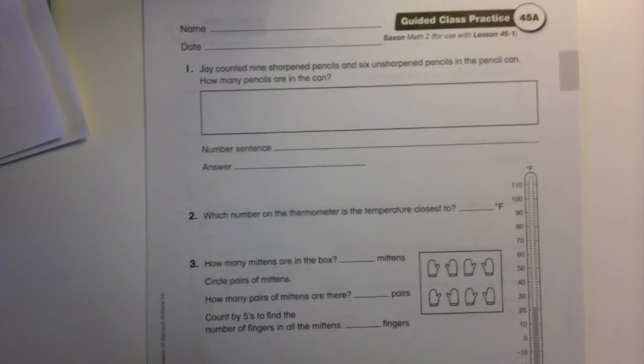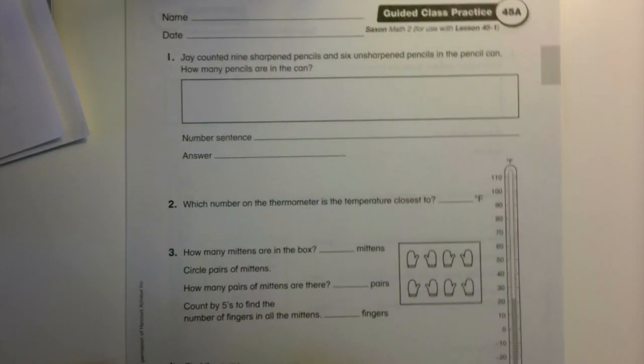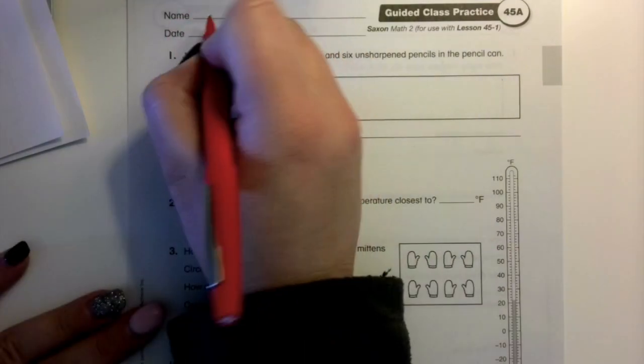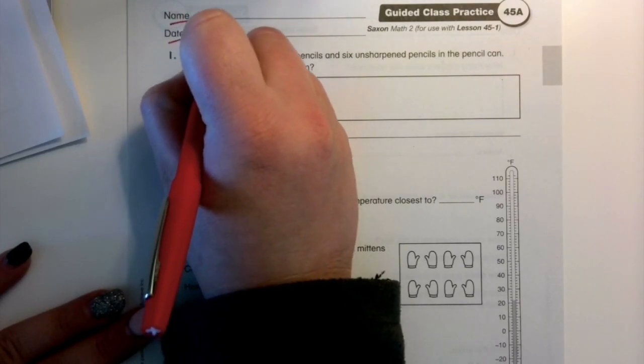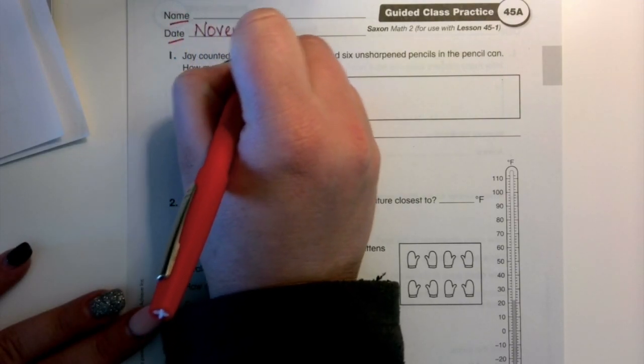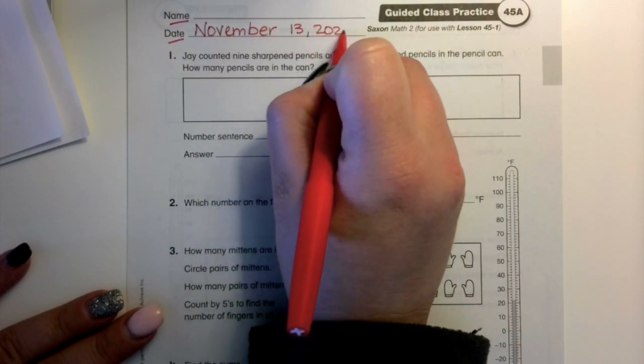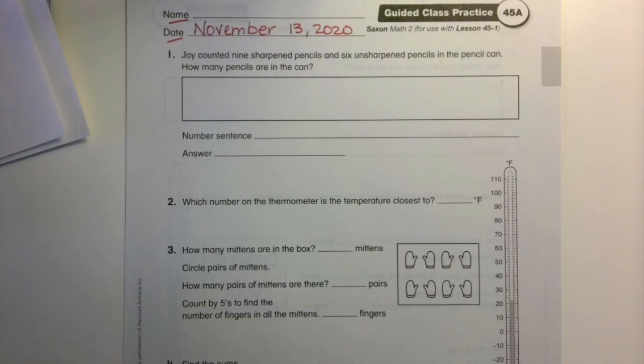Let's move on to our guided class practice in our homework 45. What we're going to do is just part of this. And I'm going to have a couple problems just that I want you to do. You need to make sure your name and the date are on your paper. Remember, today is November 13, 2020. There's a couple problems that I would like to do.